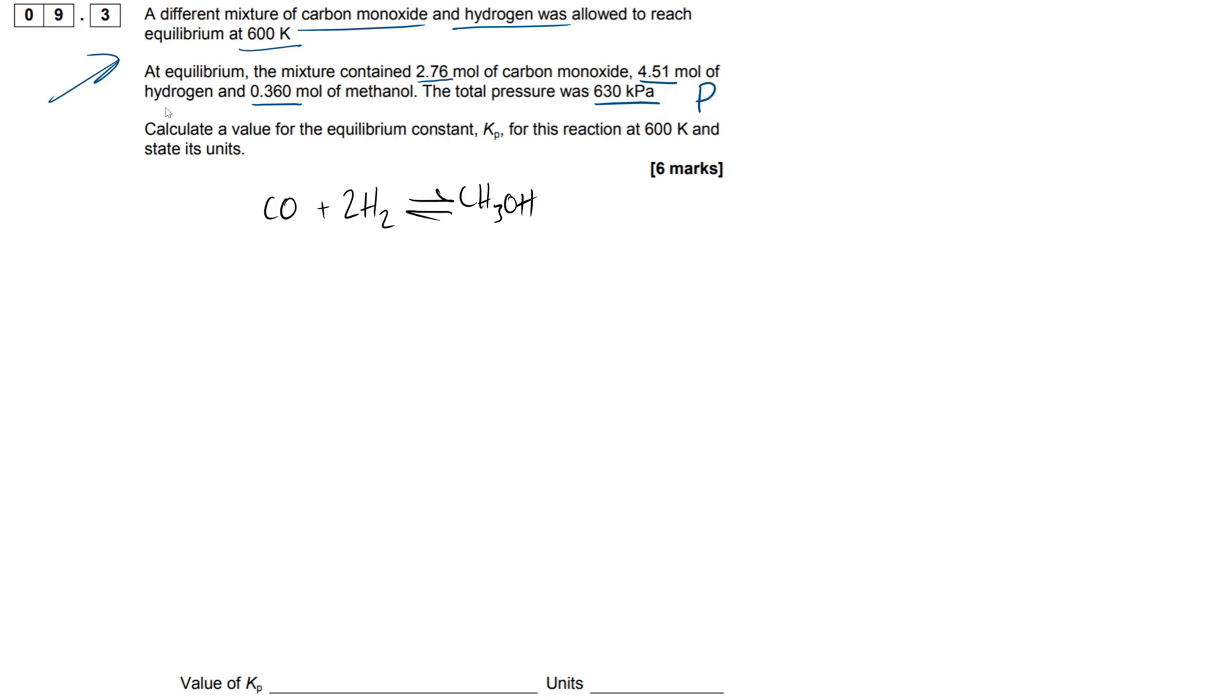We've got a total pressure here at 630 kilopascal, where total pressure is signified with a big capital P right here. We have to calculate a value for the equilibrium constant KP for this reaction at 600 Kelvin. So this I believe was from 2017, so they're being quite kind to us here. I expect things around this sort of calculation to actually get a bit more complicated, so do your best to learn it in and out. So I'll actually make a note to express it: P = 630 kilopascals.